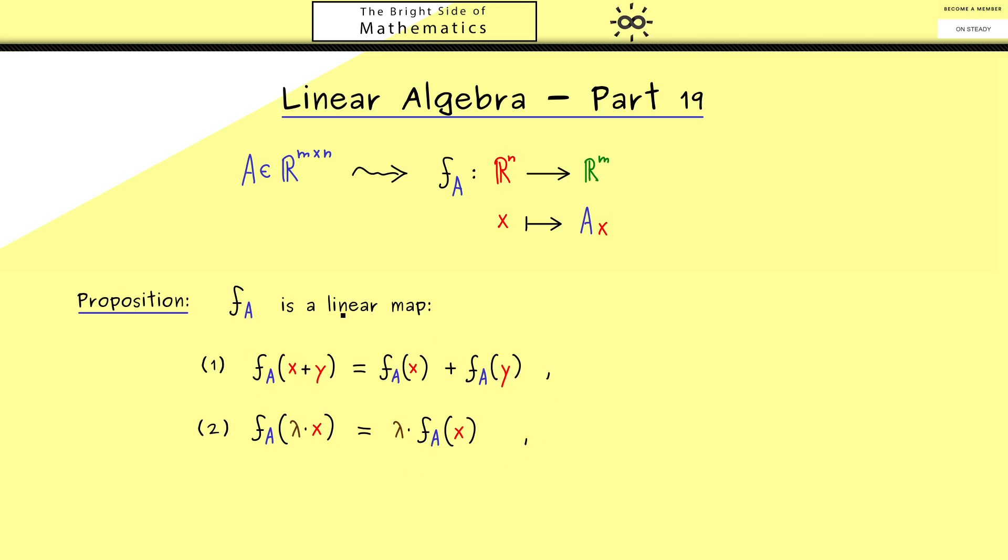So this was the general concept of a linear map. But now we are able to translate it to the special map f_A. So in other words, the left hand side and the right hand side here can be translated into the matrix vector multiplication. More precisely, the left hand side here is the matrix A multiplied with the vector x plus y. And on the other hand, on the right hand side we have A times x plus A times y. However, that this here is true, we already know by the properties of the matrix vector multiplication. More concretely, this was one of our distributive rules. Therefore, this rule here implies that our map is additive.